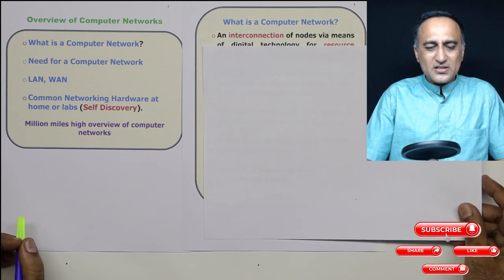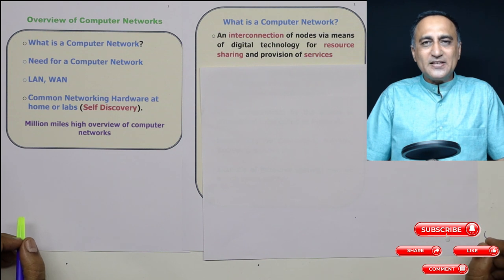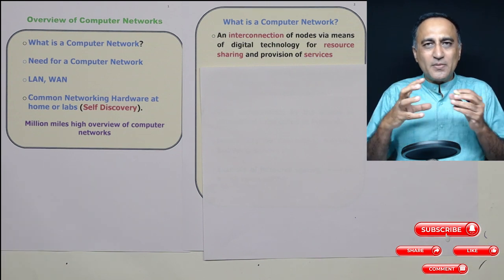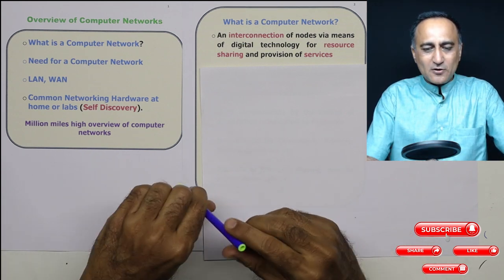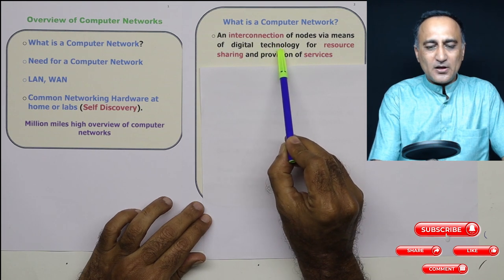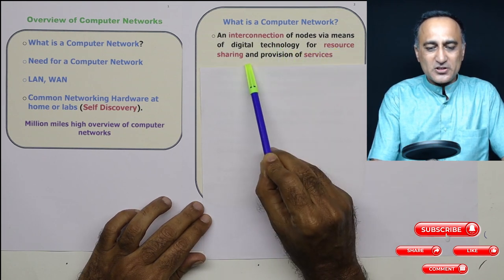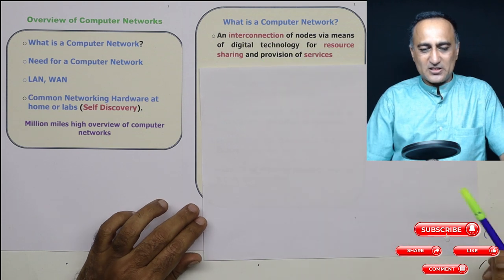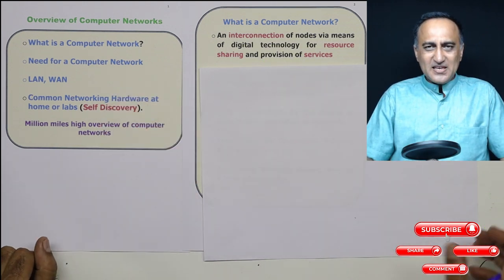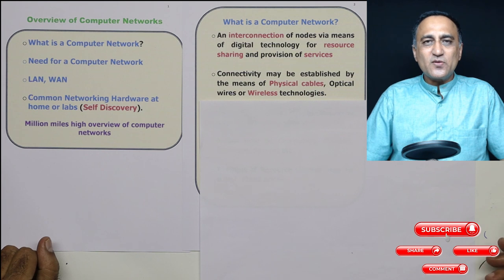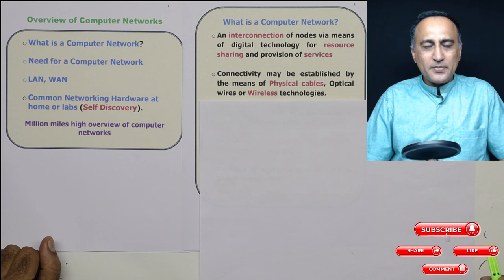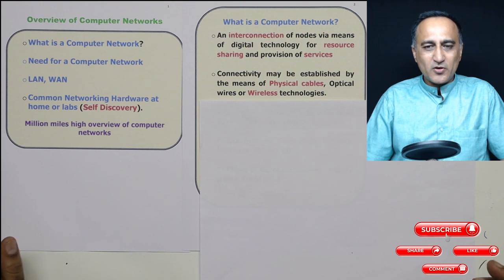The very first question is: what is a computer network? If you look at the definition, a network means there is some kind of a connection — an interconnection of nodes by means of digital technology for the purpose of sharing resources and providing services. Nodes could be your servers, a laptop, a desktop, a mobile phone, a scanner, a printer, a web server, or anything.